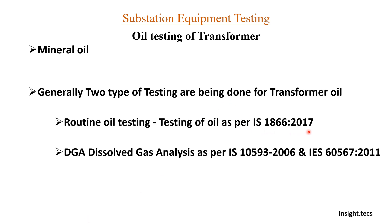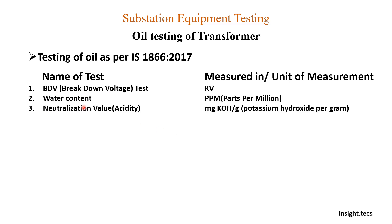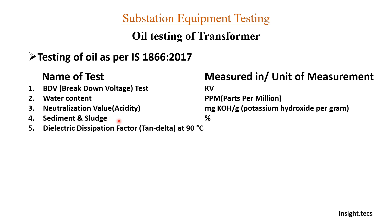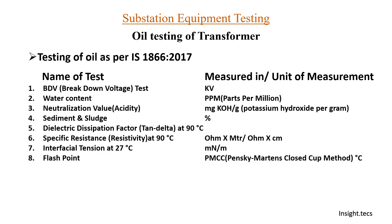Routine testing is done based on the standard IAS 1866:2017. We have already covered four routine tests: first is breakdown voltage test, then water content, neutralization value or acidity, and sediment or sludge. Now in today's video we will see dielectric dissipation factor that is tan delta, specific resistance or resistivity at 90 degrees, interfacial tension, and flashpoint.